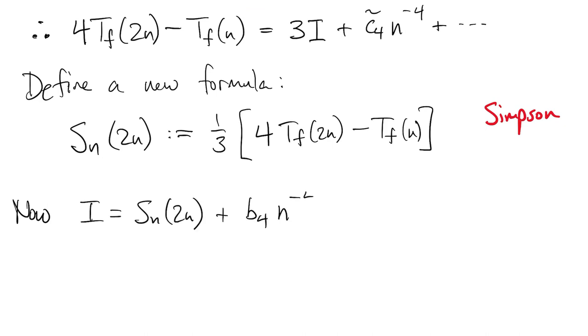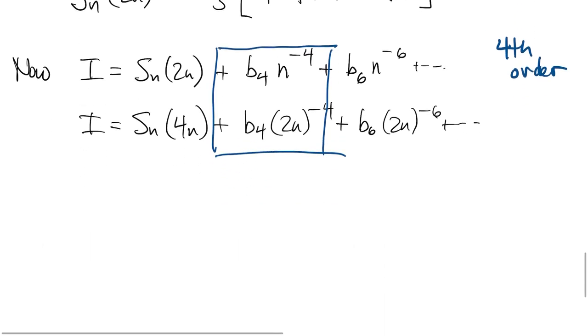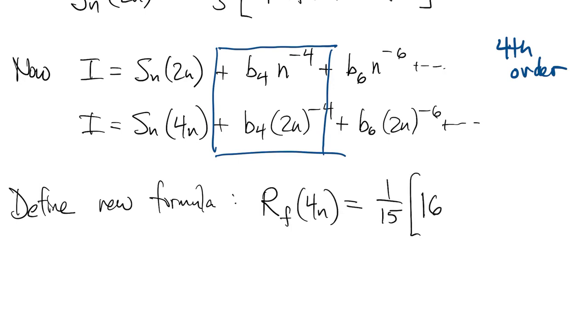Now we can play the same game again. Write down the error expansion for S, which is fourth-order accurate, and rewrite it after you double n again. Now we can take a combination that cancels out the fourth-order terms. So we define a third formula that I'm calling R, which is a combination of two S values at 2n and 4n. And this method has to be sixth-order accurate.